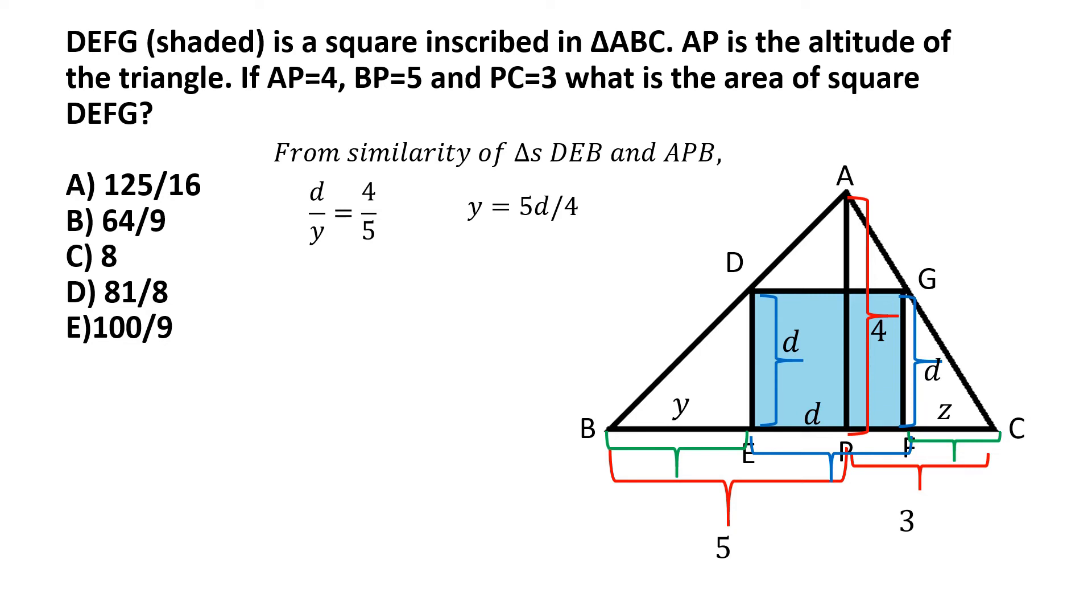Next, we consider triangles GFC and the bigger triangle APC. And in the same logic as before, these two triangles are similar because one of their angles is 90 degrees for each of the triangles, and the other angle, and that's angle C, is basically common to both of the triangles. So that will make triangles GFC and triangle APC similar to each other.